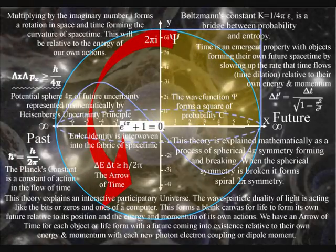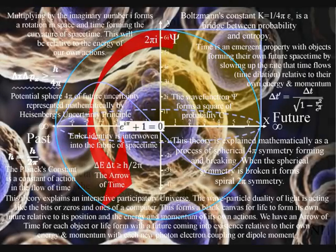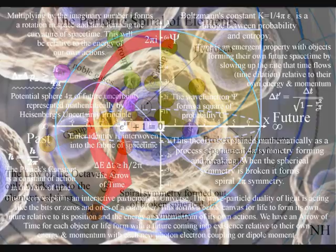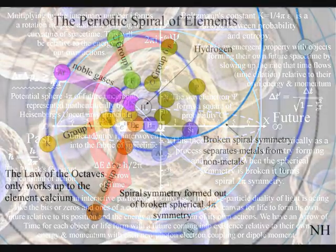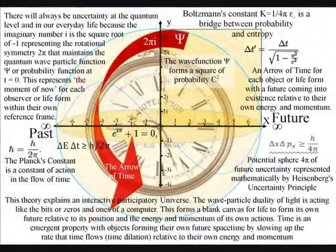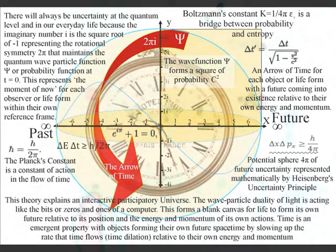This process is totally universal and interactive. From the largest object to the smallest creature, right down to the smallest element of the periodic table, will slow the rate that time flows, forming a curvature of space-time relative to its own energy or mass.